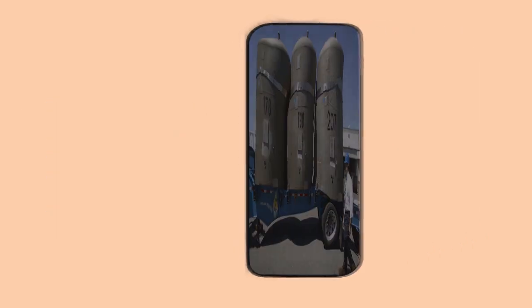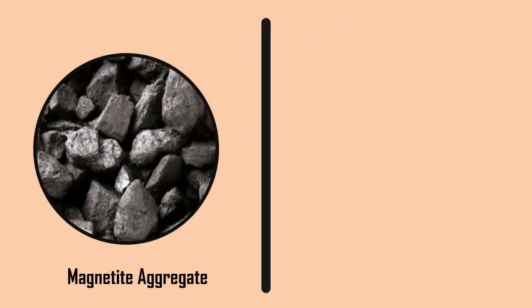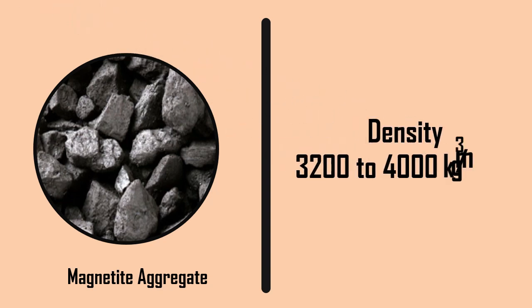Most commonly, the concrete made of magnetite aggregate, which has a density range from 3,200 to 4,000 kilograms per meter cube, is used for shielding purposes.